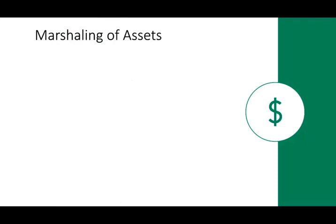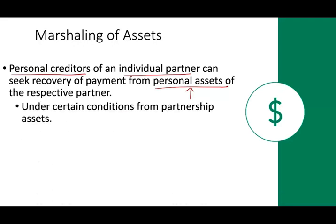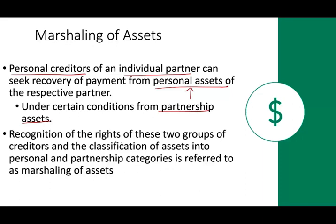Sometimes partners have both partnership debt and personal debt. Personal creditors of an individual partner can seek recovery from the personal assets of that partner. In certain circumstances, they can also go after the partnership assets. So personal creditors can recover from you personally, and also from the partnership.